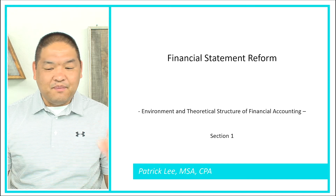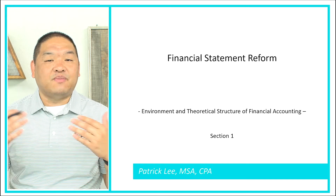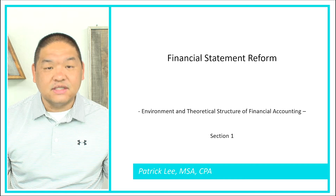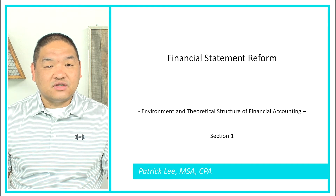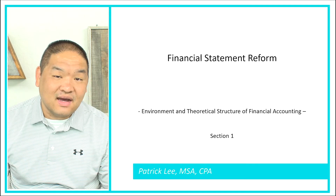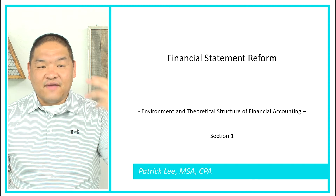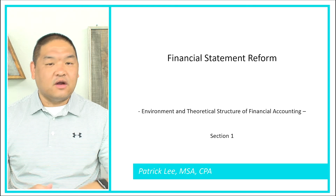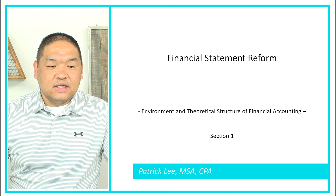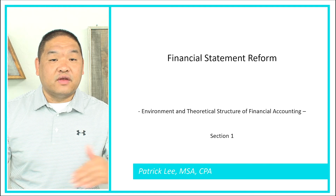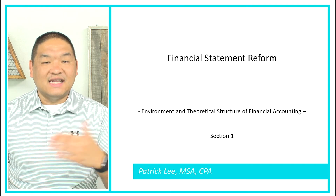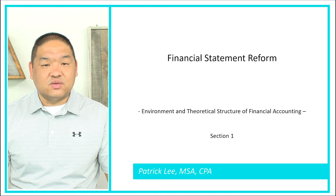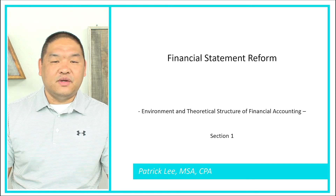To recap: the Sarbanes-Oxley Act was passed in 2002 due to fraudulent financial statements in the early 2000s. Congress had to act to restore investors' confidence so that investors would continue to invest in companies, which increases the overall economic health of the United States. Maintaining investor trust is necessary for them to invest in companies, and SOX is the attempt to do that. It required some changes, which we've talked about here, and we'll discuss more as we go through this course.